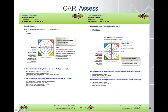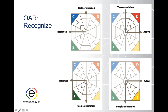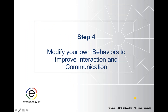Once you've established reserved versus active, then you go to tasks versus people. Are they more focused on tasks or people? People-oriented is going to be more emotional; task-oriented tends to be less emotional. From that point, we go to the R in the OAR acronym — which is to recognize. If someone is more task-oriented and focused on getting things done very quickly, chances are their primary style is going to be a D style.